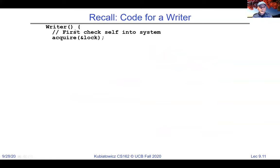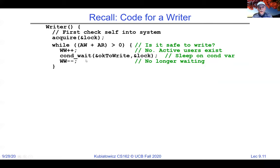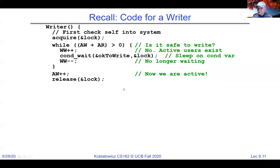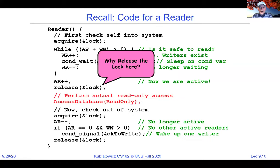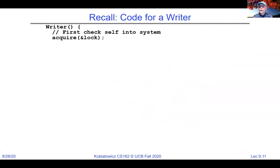The writer code acquires the lock, then loops: while the number of active writers or active readers is greater than zero (AW + AR > 0), we go to sleep on ok_to_write. We can't broadcast here because we only want one writer running at a time. So we signal only one at a time. If we succeed, we increment active writers (AW++), release the lock, perform the database write, then check out.